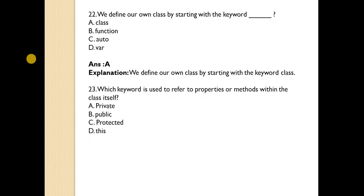Which keyword is used to refer to properties or methods within the class itself? Answer is D. This keyword is used to refer to properties and methods within the class itself.